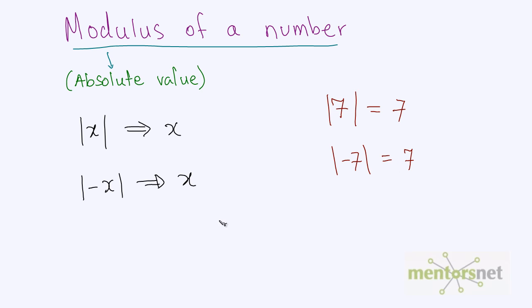So what could be the value of modulus of 2 minus 3? Well, again solve the expression inside the modulus which is minus 1, and we take the mod of it. Minus 1's absolute value or its magnitude is equal to 1, so the answer is 1.